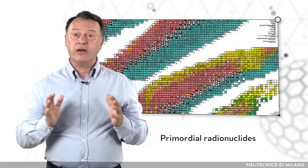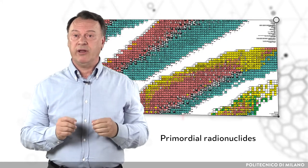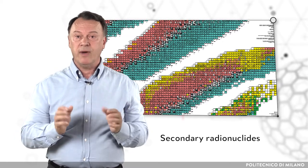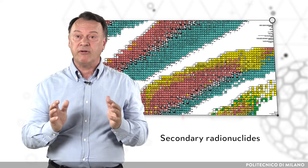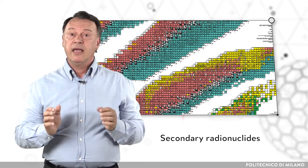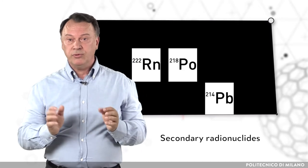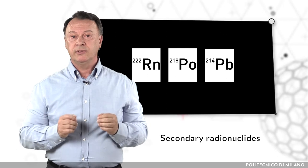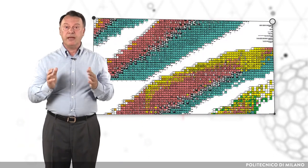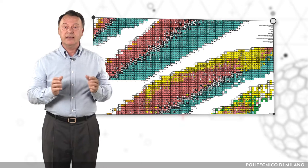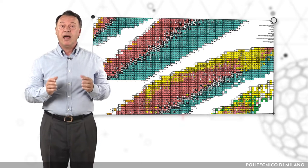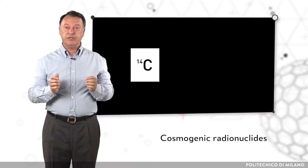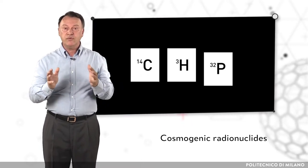Other natural radioactive elements are continuously generated. The ones derived from the radioactive decay of the primordial ones are named secondary radionuclides. As examples, radon, polonium and lead are all daughter nuclides of uranium. Other radionuclides produced by the bombardment of stable nuclides by cosmic rays are named cosmogenic. In this category there are carbon-14, tritium and phosphorus-32.